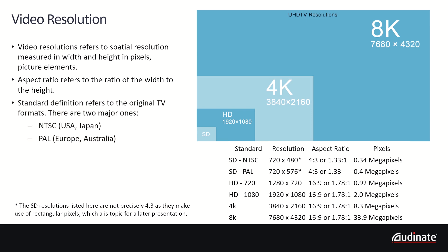Standard definition television is the original TV format. The two main ones are NTSC, used in the US and Japan for example, and PAL, used in most of Europe and Australia. There is a third major system called SECAM that is similar to PAL and is used in France. Standard definition uses a four-by-three aspect ratio, with four units of width to every three units of height.